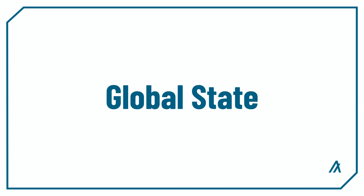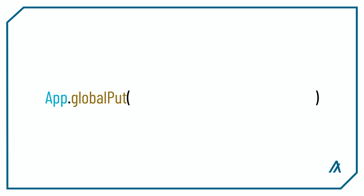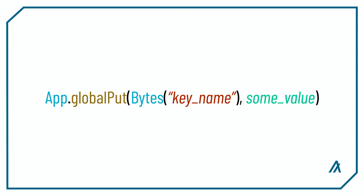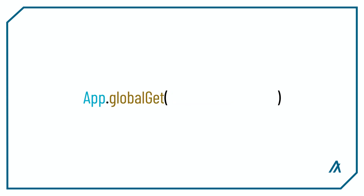Let's first talk about global state. To write a global state, you use the app.globalput method and pass in a state key as the first argument and the default state value as the second argument. This will create and write a global state on your smart contract. To read a global state, you use the app.globalget operation and pass in the state key as an argument. This will read the global state and return the value for you to use within the smart contract or for external use.